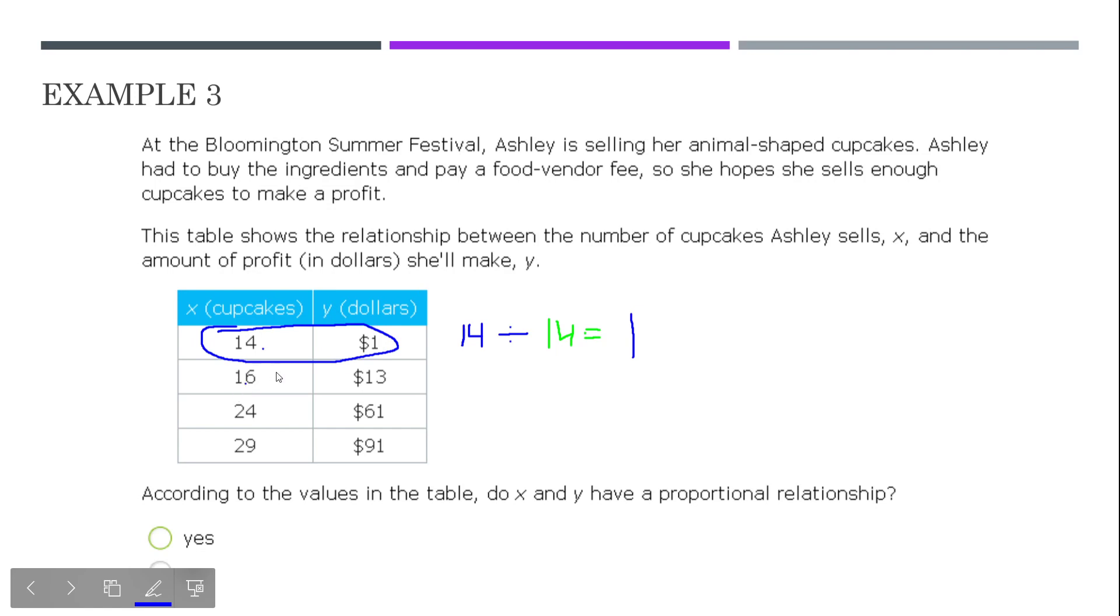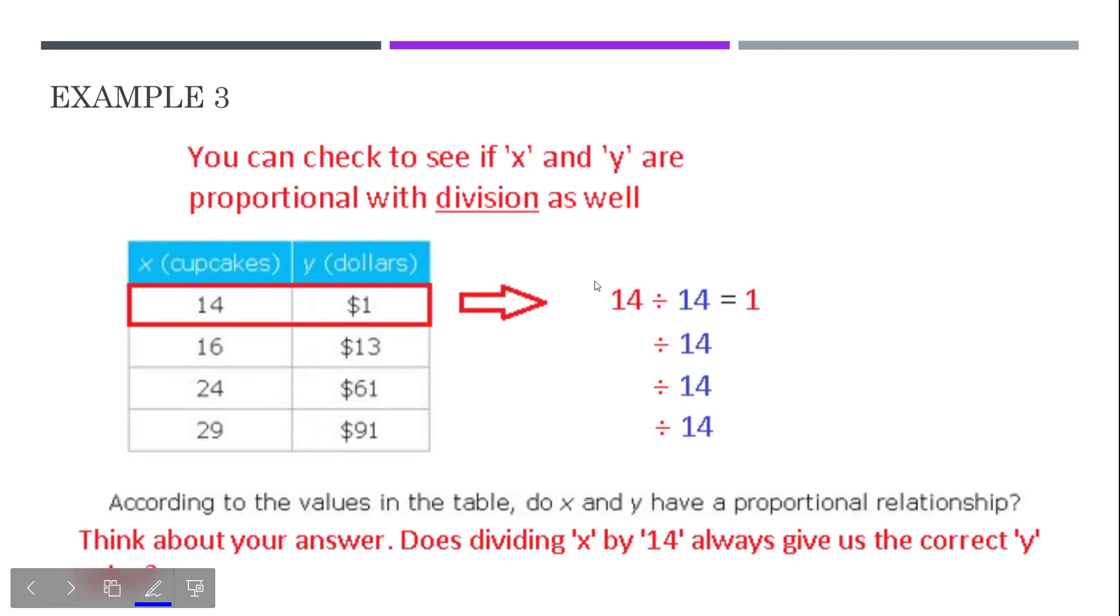Okay. So, that's telling us that she's really not making all that much money for selling 14 cupcakes. So, if you look at the second row, this should already be raising a red flag in your head if you're thinking about it. Okay. She sells two more cupcakes and then makes 12 more dollars from that. To me, that seems pretty clear that she's not making the same amount of money for every cupcake she's selling. Alright. There's other things that are changing here. Alright. So, she's not making that same amount each time. But, let's go ahead and try it out. Let's test it out with the numbers.